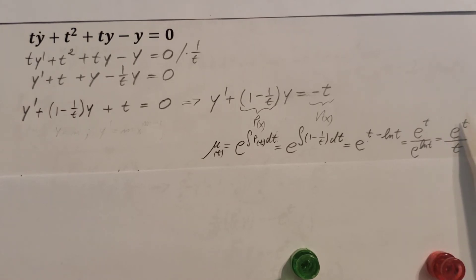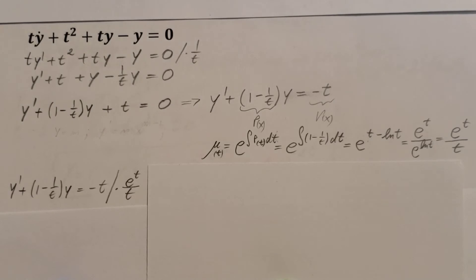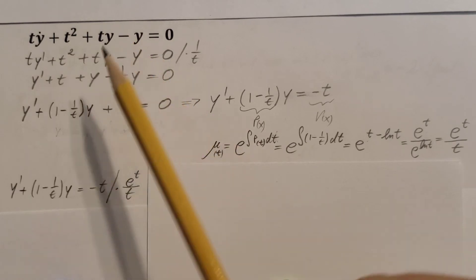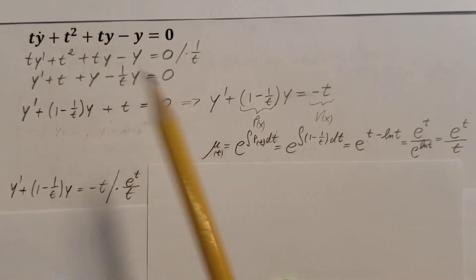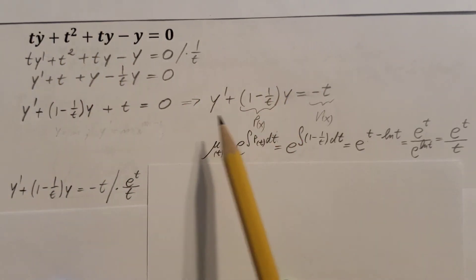Now the next step in this process, we're going to take the integrating factor and we're going to multiply our equation by it, every single term of it. And we're not going to use this form, we're going to work with this form right here, the one that we turned into a nice form.